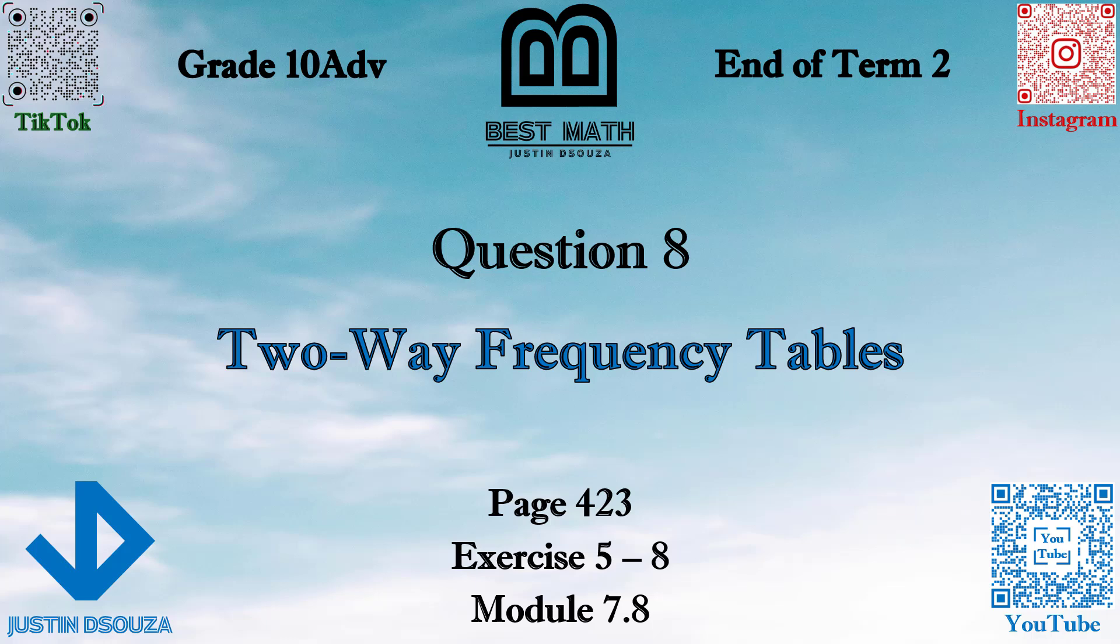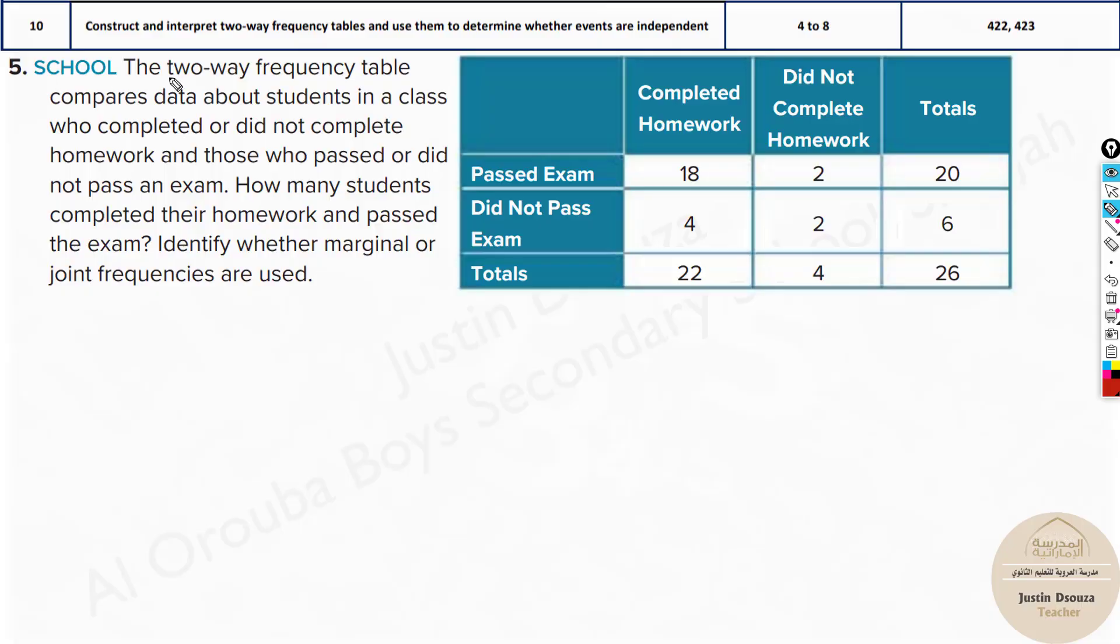In this video we will learn how to construct and interpret two-way frequency tables. Here we have a two-way frequency table which compares data about students in a class who completed or did not complete homework and those who passed or did not pass an exam. This is the completed homework, did not complete homework, and among the students who completed homework, who passed and who did not pass.